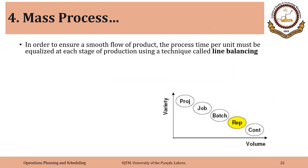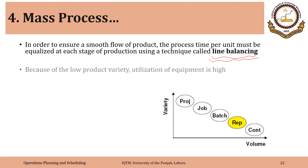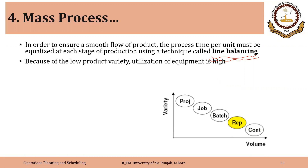In order to ensure a smooth flow of product, the process time per unit must be equalized at each stage of production using a technique called line balancing. As the operations are performed in a standardized sequence, they are highly dependent upon each other. The time spent at each workstation should be almost equal to the preceding and following operation to keep the line running without any pileup of work-in-process inventory. Because of the low product variety, utilization of equipment is very high.